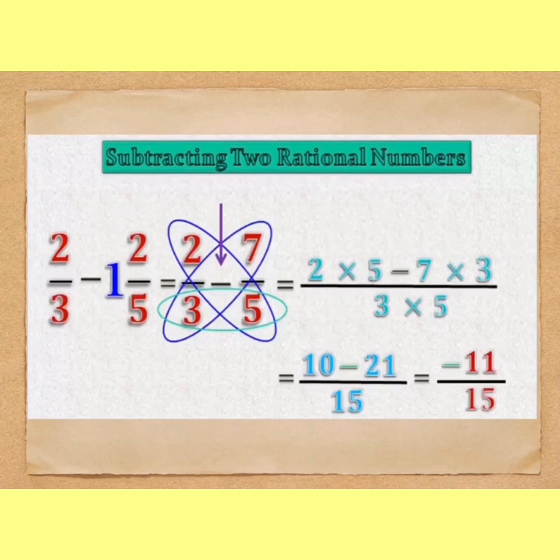In the next slide, 2/3 minus 12/5. Again, same. LCM is 50. And multiply 2 by 5 and 7 by 3. You will get minus 11 by 50.